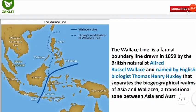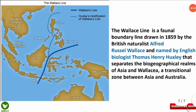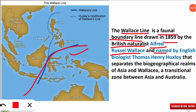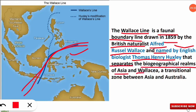Another frequently asked topic is the Wallace Line. It is a faunal boundary line — a line based on the division of fauna (animals) — drawn in 1859 by British naturalist Alfred Russel Wallace. He demarcated this line according to differences in fauna, but the name 'Wallace Line' was given by Thomas Henry Huxley.